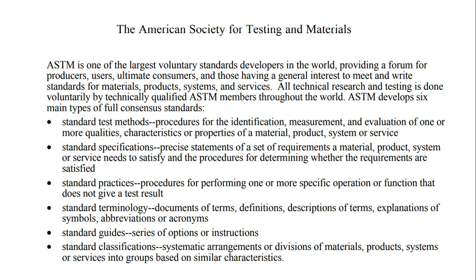ASTM also covers standard specifications — requirements for particular material production systems — and standard terminologies for materials. For example, steel is referred to as AISI 304, and aluminum and pressure vessel materials have their own designations. ASTM classifies materials into groups such as aluminum alloys, copper alloys, nickel alloys, and steel alloys.